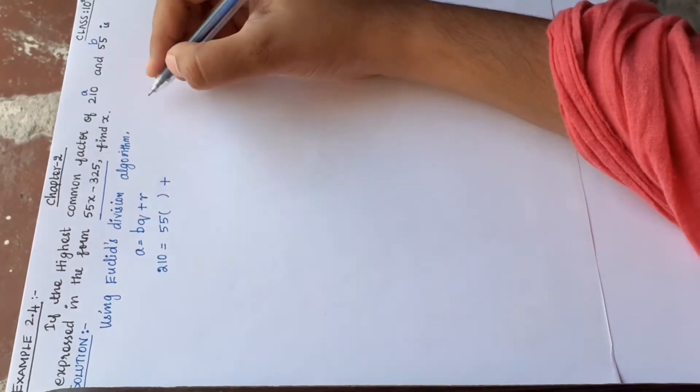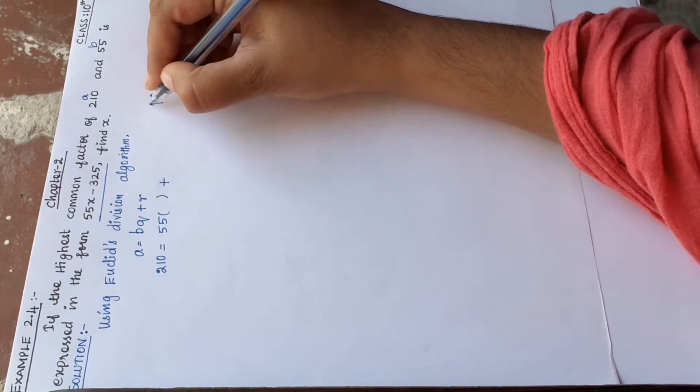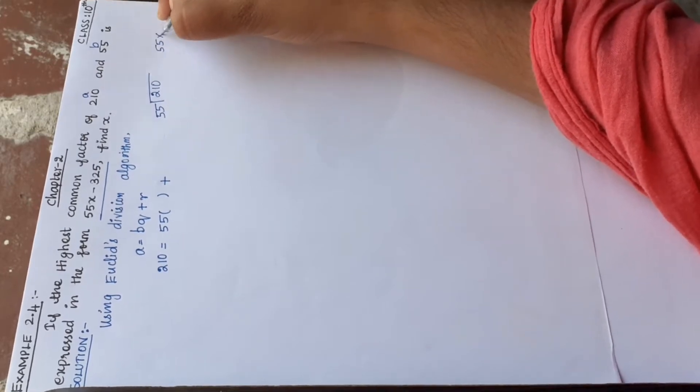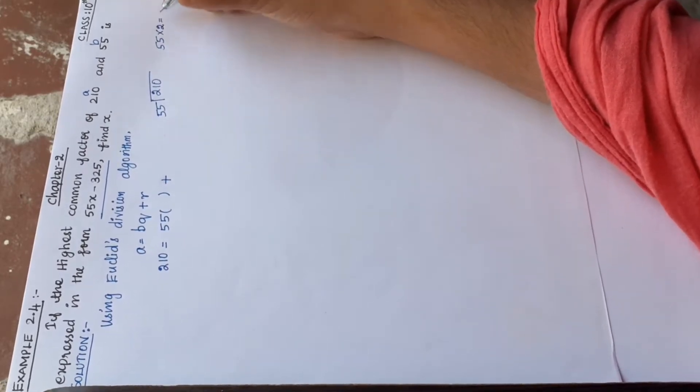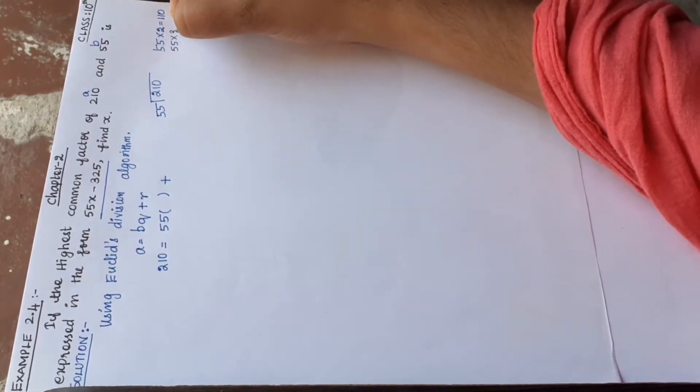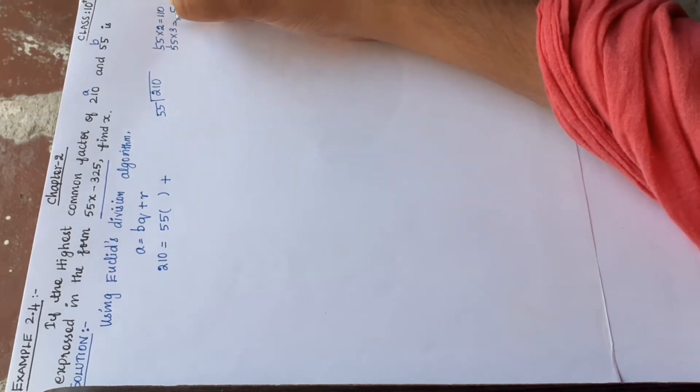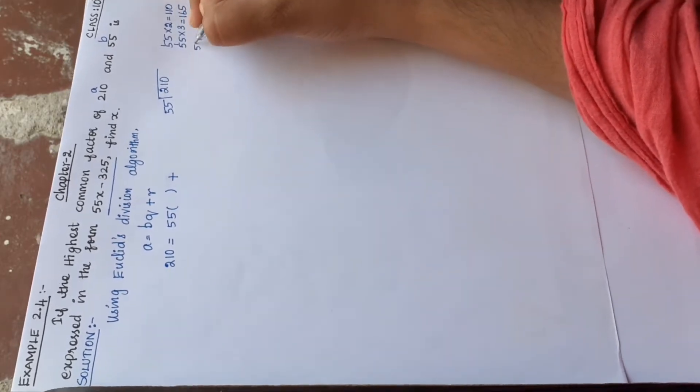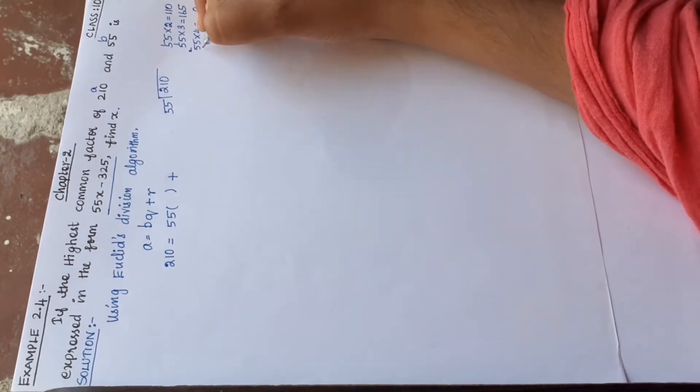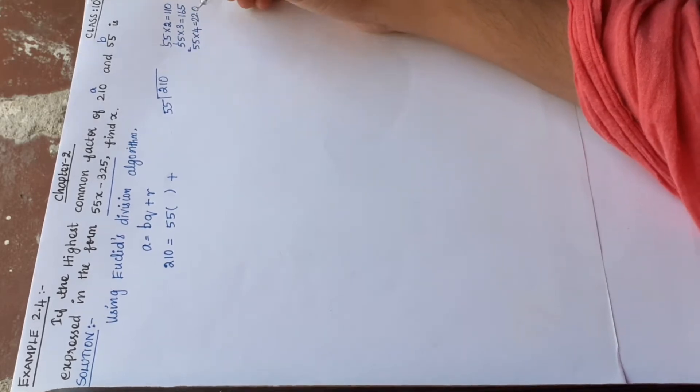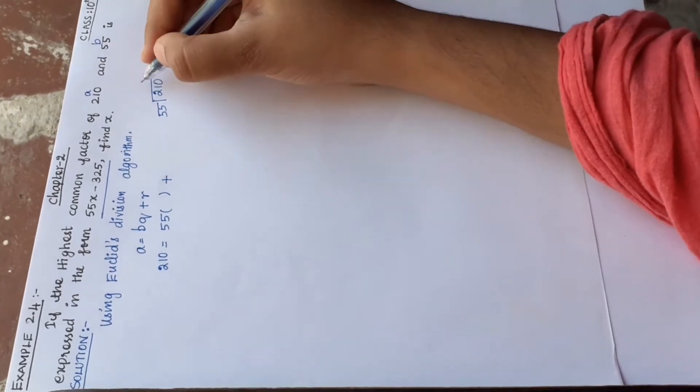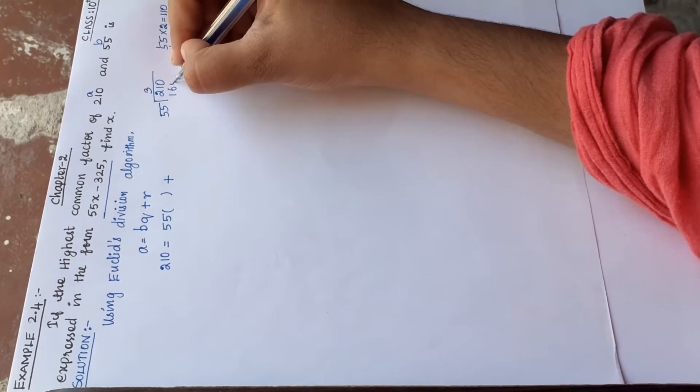210 divided by 55. Let's work through the 55 times table: 55 × 1 = 55, 55 × 2 = 110, 55 × 3 = 165. 55 × 4 = 220, which is greater than 210, so we use 55 × 3 = 165.